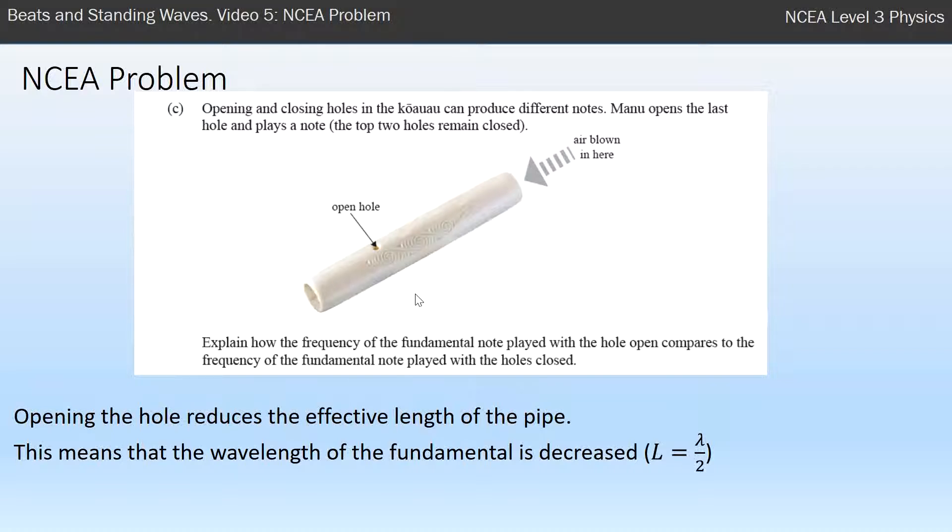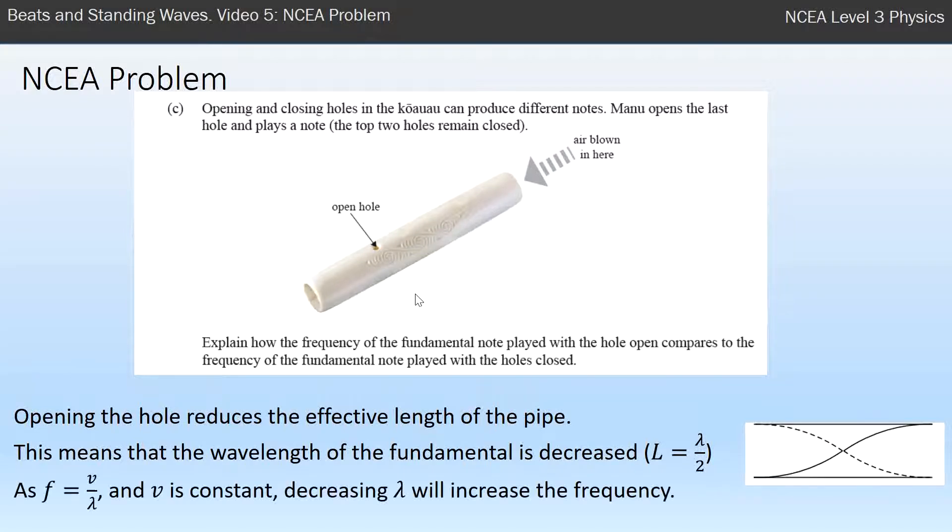Because you've got a smaller length, the wavelengths of the standing waves you can fit in there will be decreased. In the case of the fundamental, we can only fit half a wavelength in, but that half wavelength is l, and l has got smaller. So the wavelength is smaller as well. Using the wave equation to work out frequency, the speed of sound does not change. Therefore, decreasing the wavelength is going to increase the frequency and make it a higher pitched sound.